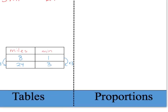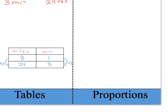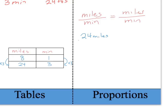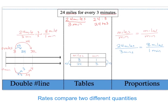Finally, let's talk about proportions. Proportions are two ratios that are equal. So I can say that miles over minutes should equal miles over minutes. Given that same problem, I can say that 24 miles per three minutes is the same as eight miles per one minute — if I reduce 24 over three, I still get eight over one. So let's use these three strategies to solve the following examples.